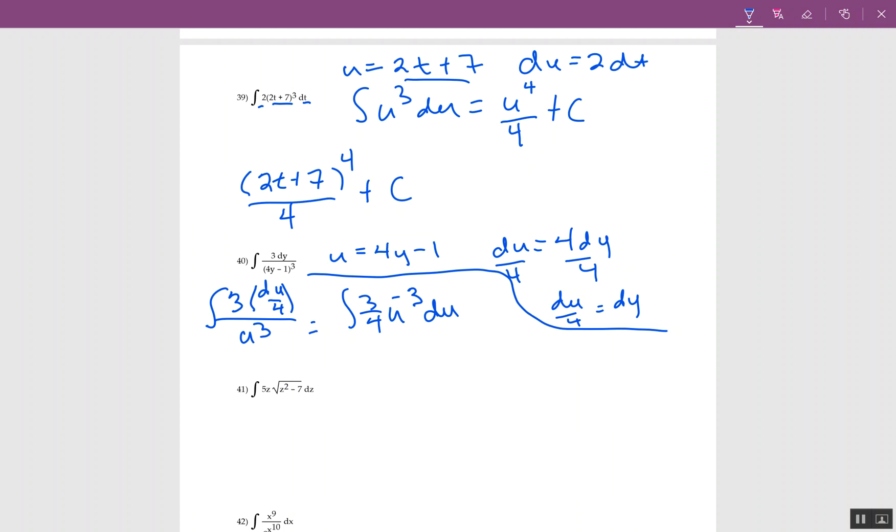The rewriting helps me see what I have to deal with. Keep the 3/4. The u increases the power to negative 2, divide by negative 2, plus c. The numbers go together: 4 and negative 2 becomes negative 3 over 8. Go back to u, which was 4y minus 1, with new power negative 2, plus c.